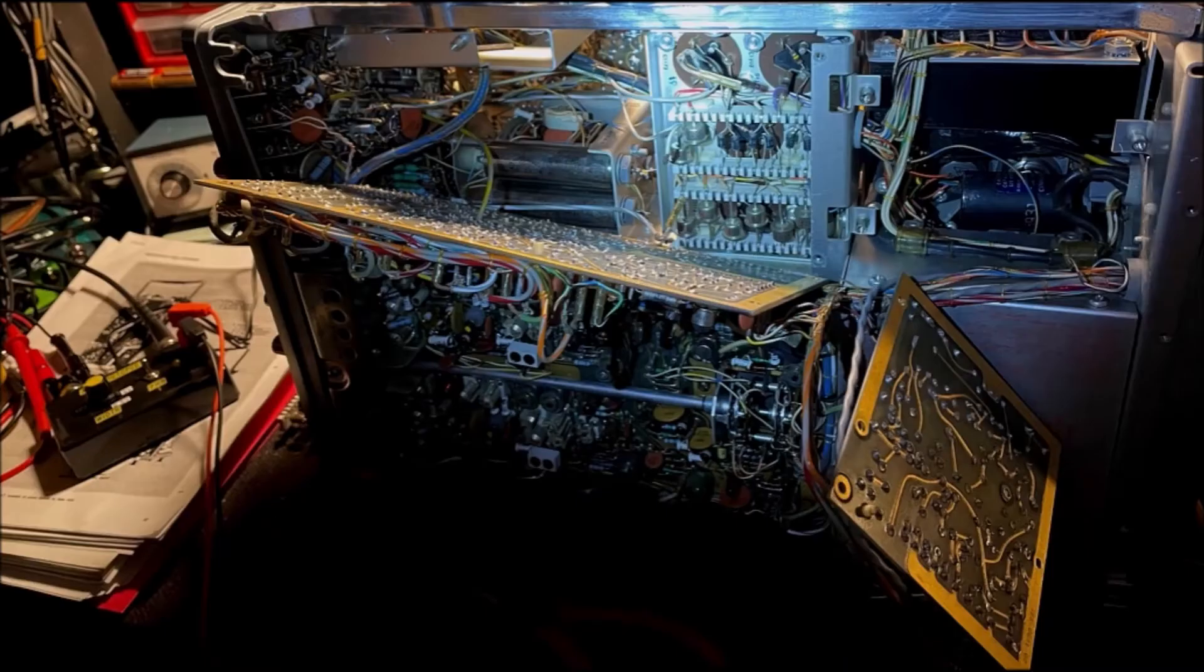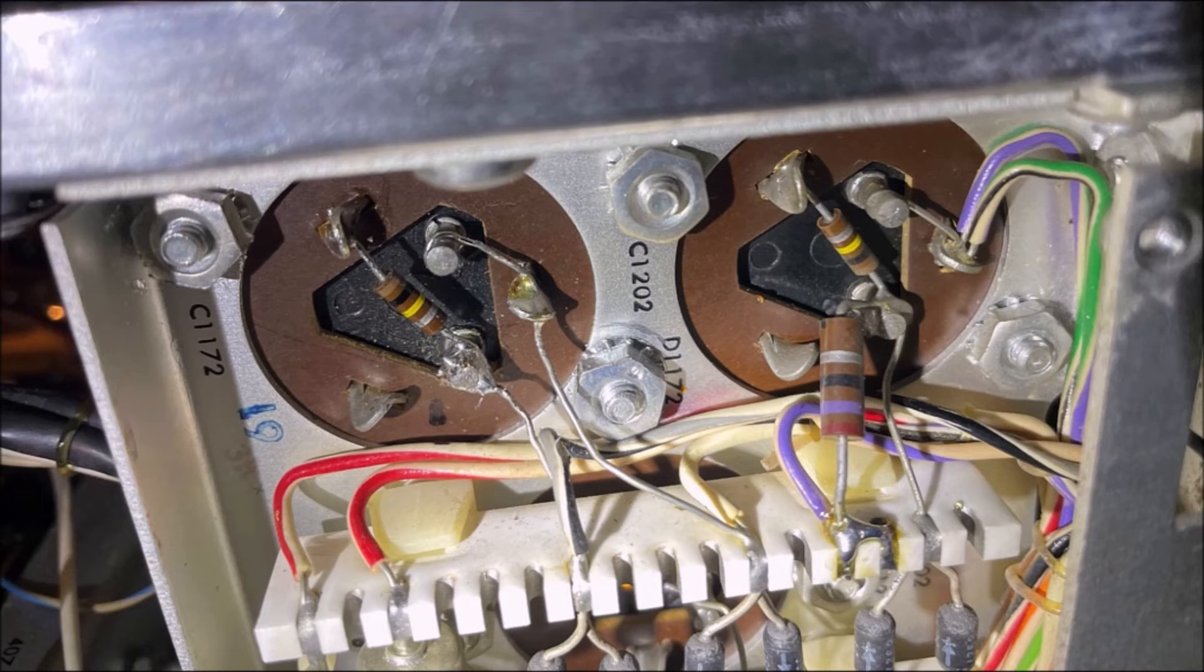I only disconnected as many wires as needed so I could get to the capacitors and leave the circuit boards in place, as there were a lot of wires to deal with. Once I had those out of the way, I could finally get access to C1172 and replace it.